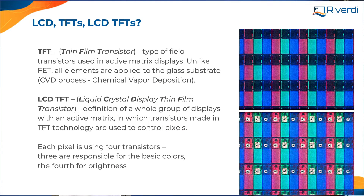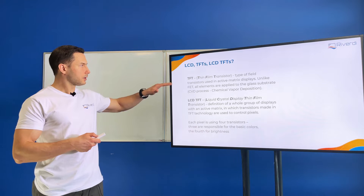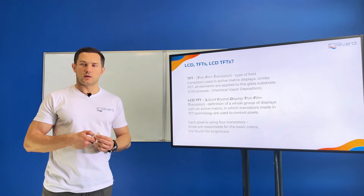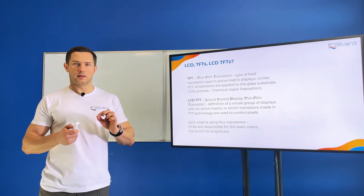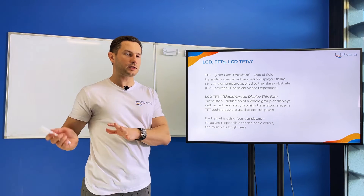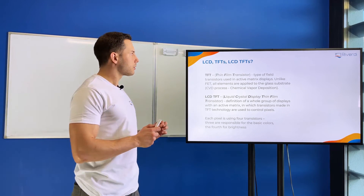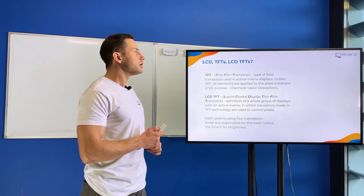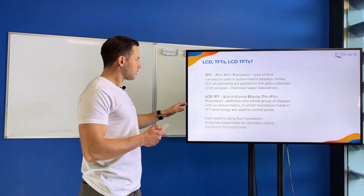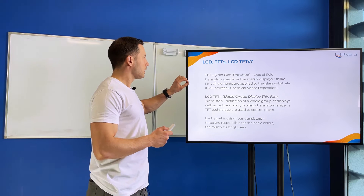A TFT display is called an active display. Active means we have a transistor — or more than one transistor — in every cell, every pixel, and actually in every sub-pixel. TFT is an abbreviation for thin film transistor: a transistor that is very small and very thin. They are literally built into the pixel itself, not outside in a controller. For example, this big 55-inch TFT display contains millions of transistors in the pixels.